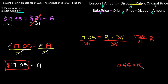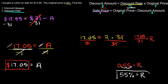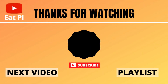0.55 is a decimal, but the discount rate needs to be a percentage. Move the decimal two places to the right: 0.55 becomes 55. So the discount rate equals 55%. If you found the video helpful, leave a thumbs up below, and let me know in the comments if you have questions or want more examples.